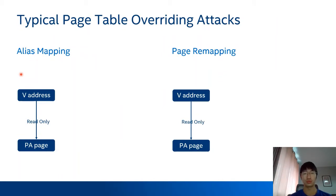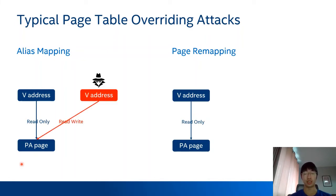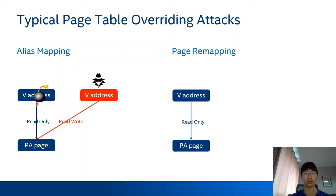Let's look at the two typical page table overriding attacks. One is alias mapping. For example, one virtual address is mapped to a physical page without write permission. If an attacker already has arbitrary memory access, they can set up an alias mapping to the physical page, and through this alias mapping memory writes are allowed, so the attacker can modify the page's content — for instance, injecting shellcode into the page. Now, if they try to execute code, the shellcode is triggered.